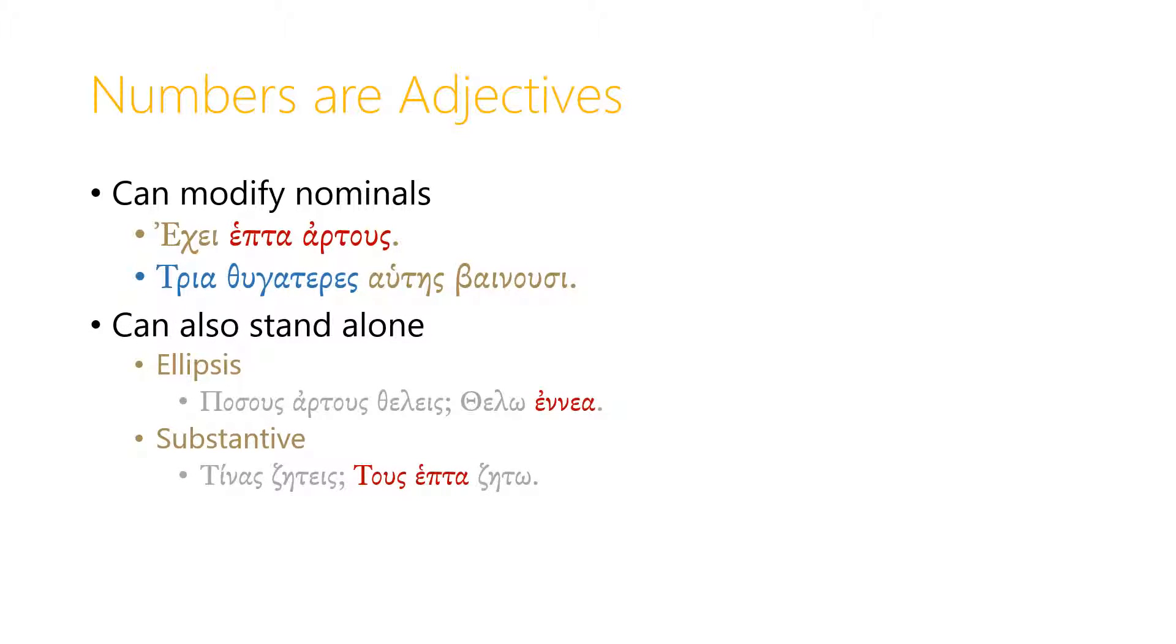But numbers can also stand alone. They can do this in two ways. One is what's called ellipsis. If I say pasus artus theles, how many loaves of bread do you want? I might answer thelo ennea.